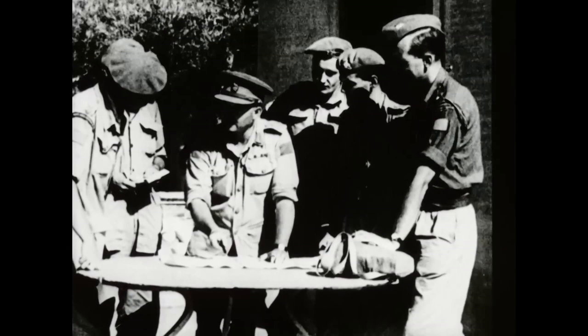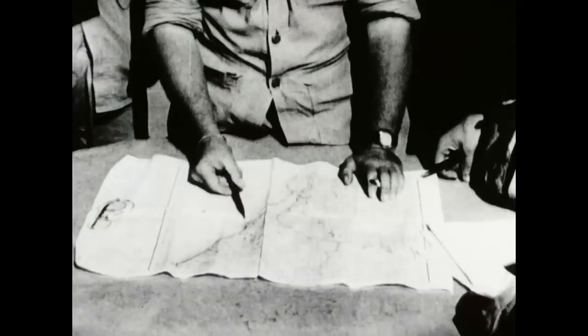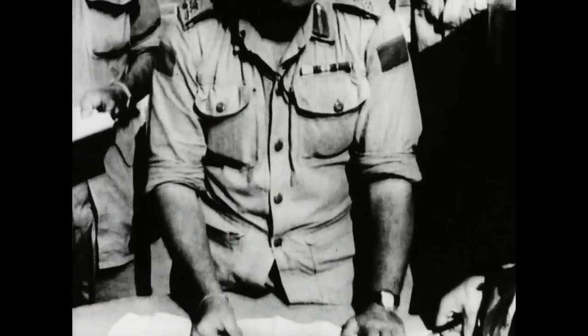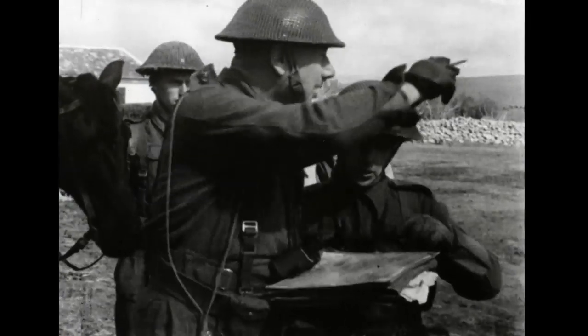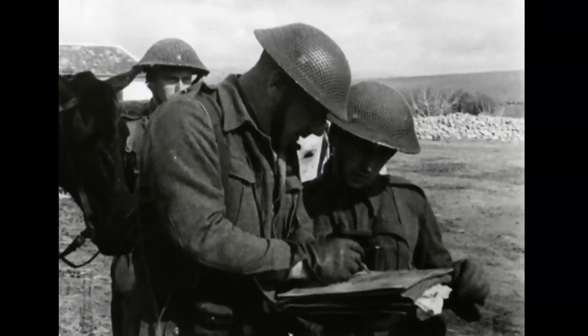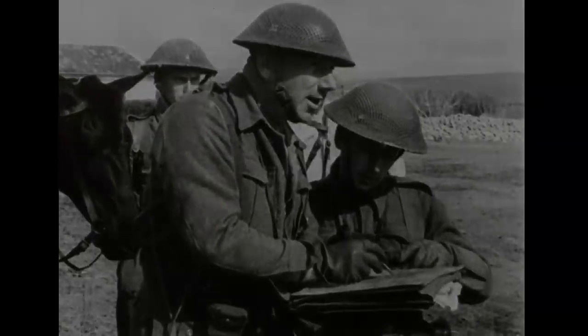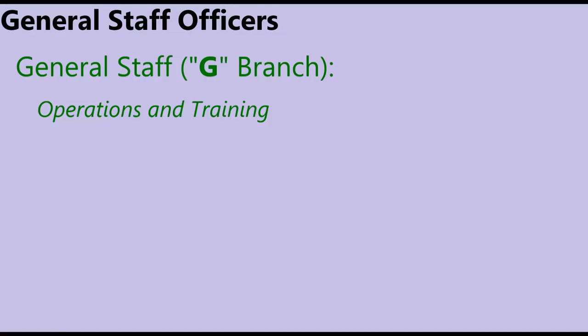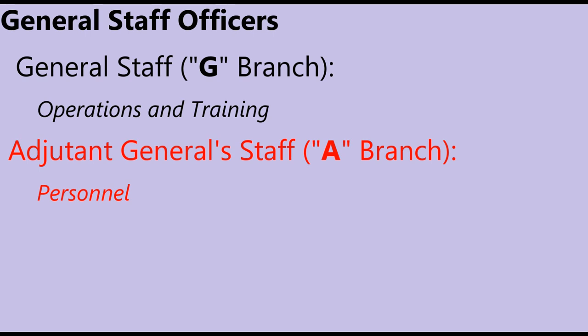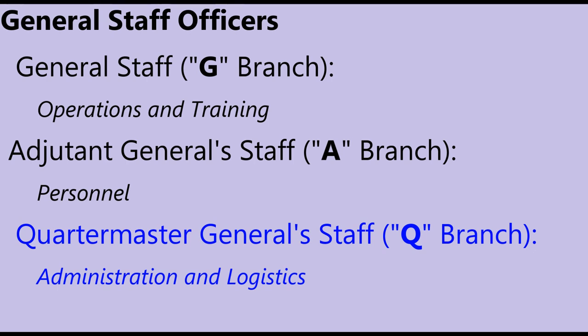While units rested and reformed their ranks, commanders and staff officers were hard at work planning the next phase. Canadian Army officers had two main types of duties: command appointments and staff appointments. The General Staff system adopted in 1905 by Britain and Canada had three main branches: General Staff, or G Branch, responsible for operations and training; the Adjutant General Staff, or A Branch, responsible for personnel; and the Quartermaster General Staff, or Q Branch, responsible for administration and logistics.